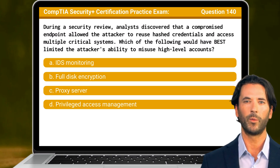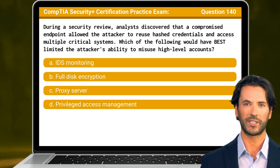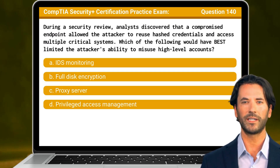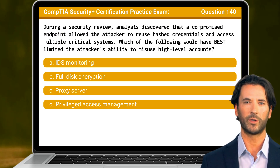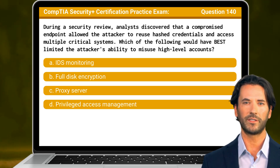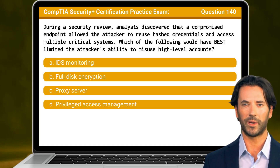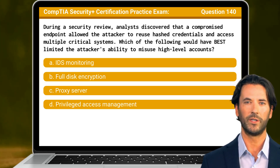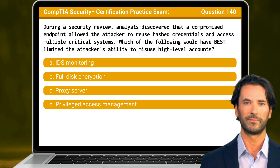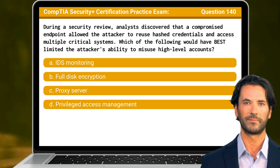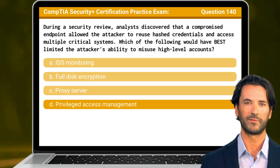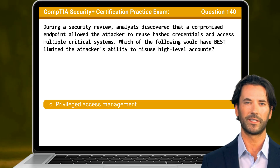Question 140. During a security review, analysts discovered that a compromised endpoint allowed the attacker to reuse hash credentials and access multiple critical systems. Which of the following would have best limited the attacker's ability to misuse high-level accounts? The answer is D: privileged access management.